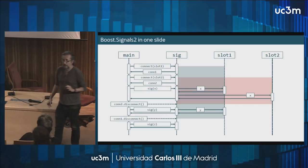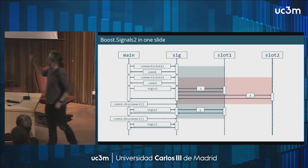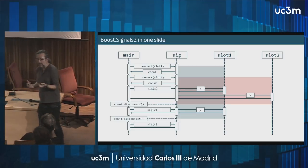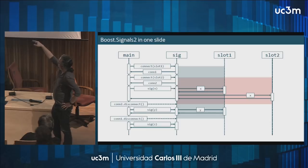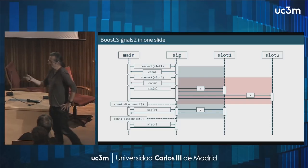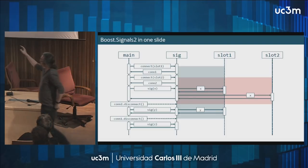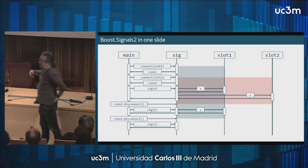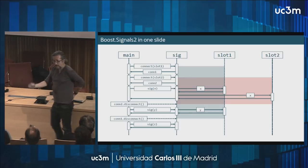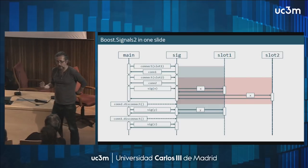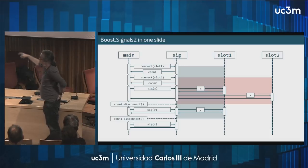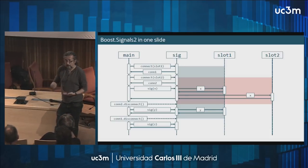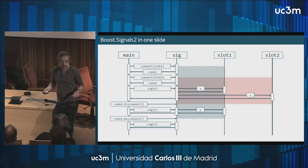Everything you need to know about Boost.Signals2 fits in one slide. A signal is an object to which slots — functions or generalized callable objects — can be connected. When I connect slot one and slot two to the signal, I get connection tokens to manage those connections later. When I instruct the signal to emit a value, the connected slots are called with that value. If I disconnect one slot, subsequent emissions only reach the remaining slot.